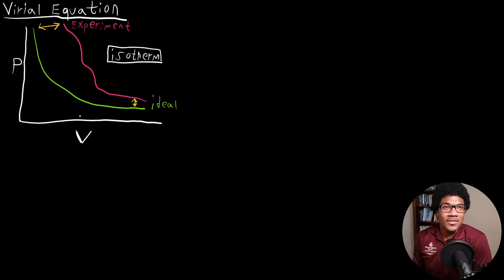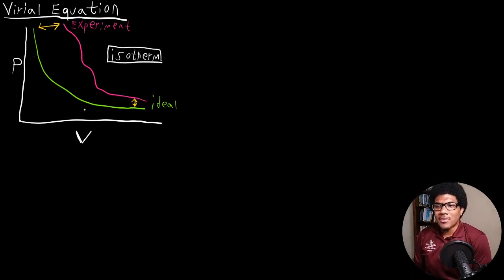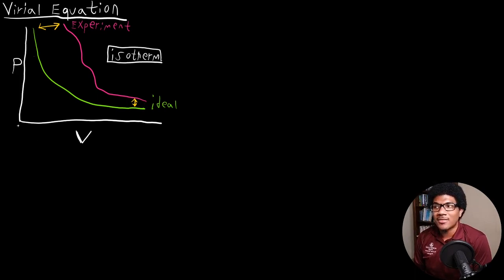Once you get to higher pressures and lower volumes, you start to see a much larger deviation. That's where they start to see major differences. So what does this tell us? Well, this tells us that at low pressures and high volumes, the ideal gas law does a pretty good job of modeling reality.